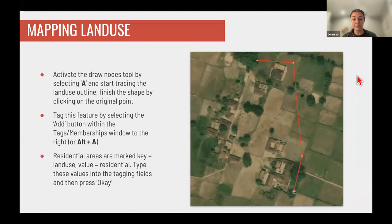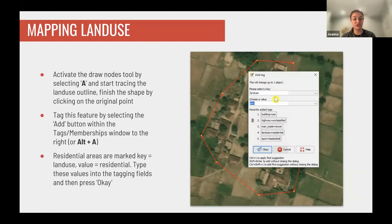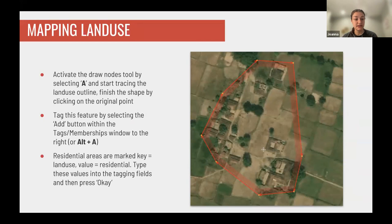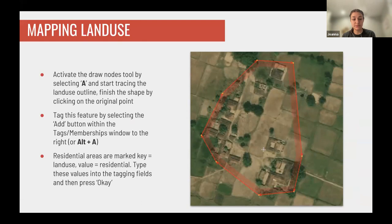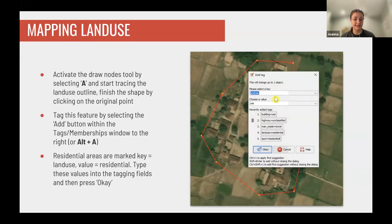For mapping land use, you draw a closed shape using the A tool and outline the area. To add a tag, hit Alt+A or use the Tags and Memberships window on the right. Enter the key as 'landuse' and the value as whatever land use applies — for example, 'residential' for an area that's mostly homes. Press OK and the data is saved within JOSM.